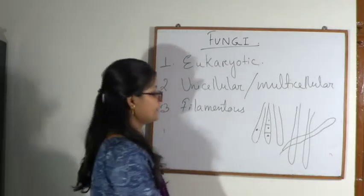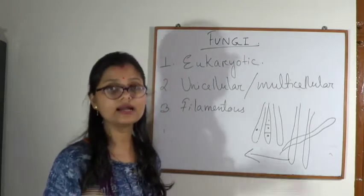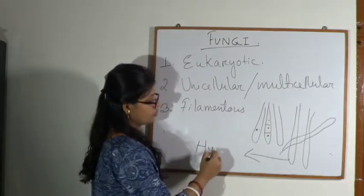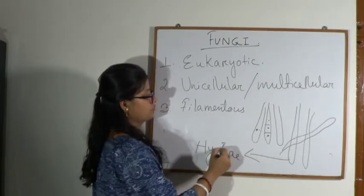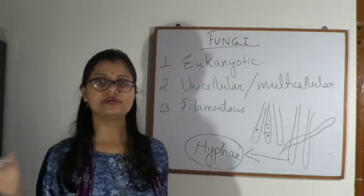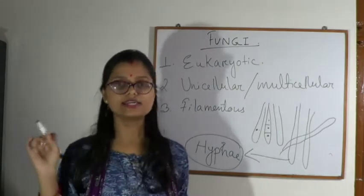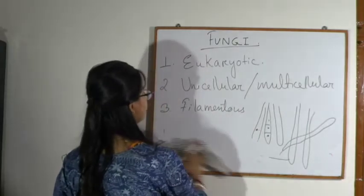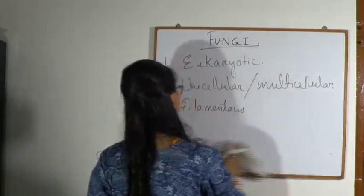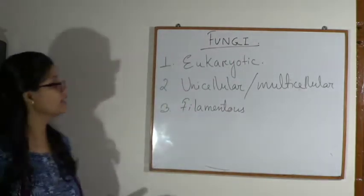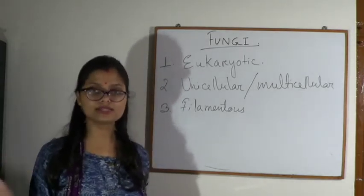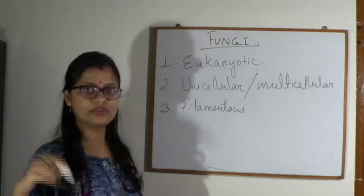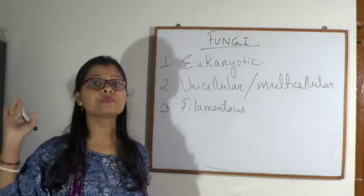Fungi have long thread-like structures. This filament in the case of fungi is known as hyphae. Remember the word hyphae. Fungi are eukaryotic, meaning they have a true nucleus. They can be unicellular or multicellular and have filamentous structure — maximum all have filamentous structure except yeast, which is a round single-cell structure. This thread-like structure is called hyphae.